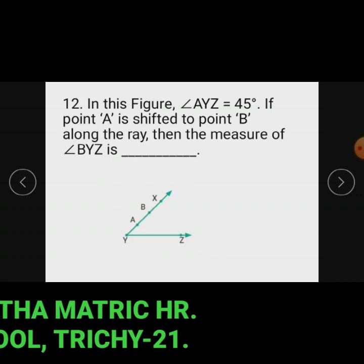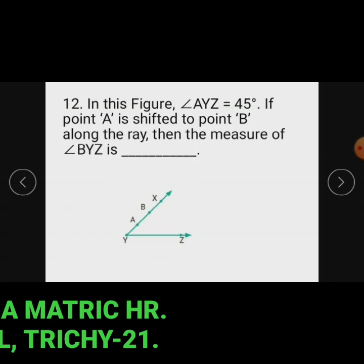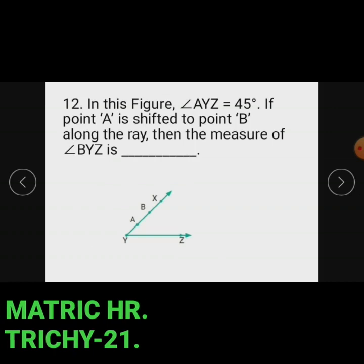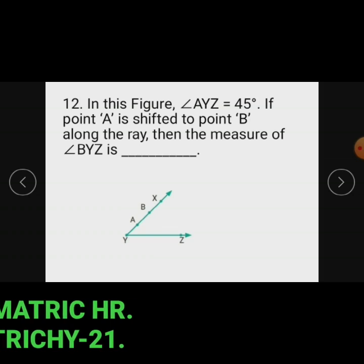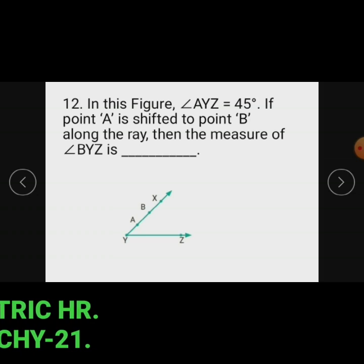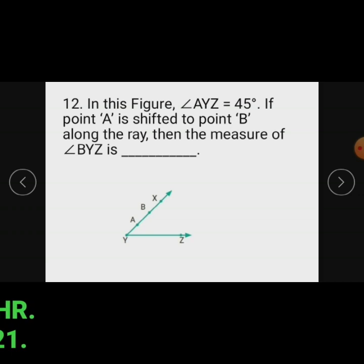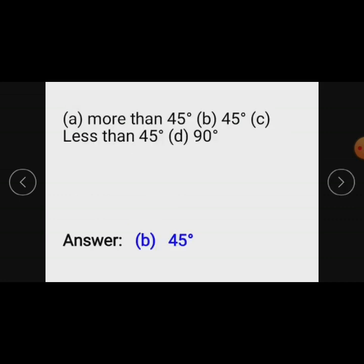Question number 12: In this figure, angle AYZ equals 45 degrees. If point A is shifted to point B along the ray, then the measure of angle BYZ is how much? Here, whether we have angle AYZ or angle BYZ, the angle at Y is not changed. So angle AYZ equals 45 degrees and angle BYZ is also equal to 45 degrees. The answer is option B, 45 degrees.